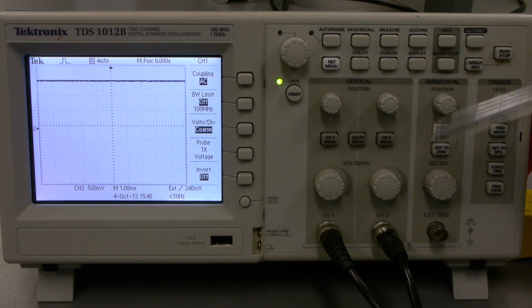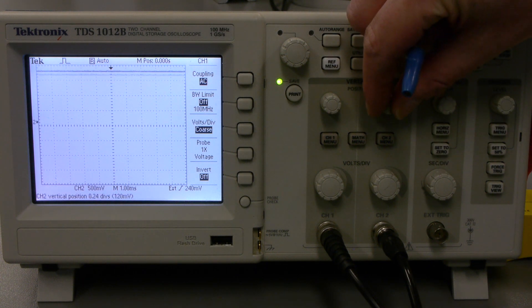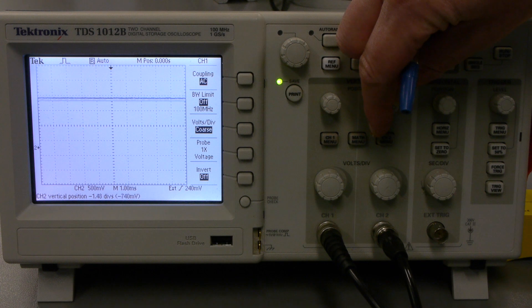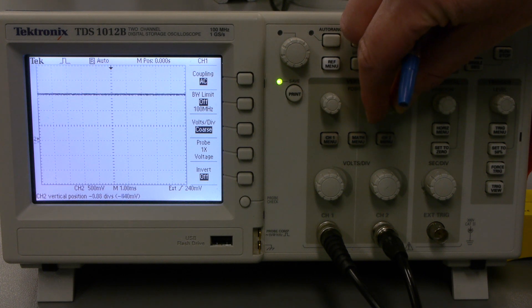Also, the vertical adjustment has actually two knobs associated, the one we showed earlier and this other one was actually used to change the position of the signal anywhere on the screen. This is very useful if you want to compare two signals or you want to move one away from the other.